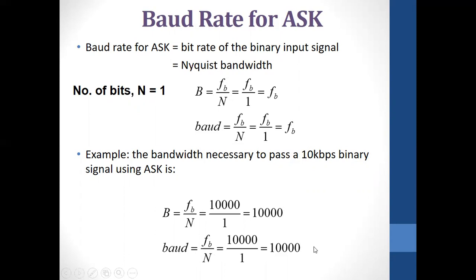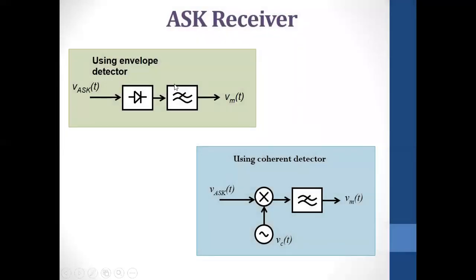At the receiver: there is a filter after receiving the signal, and then it is decoded to recover the original Vm line coding. The receiver types include the envelope detector (or amplitude detector) and the coherent detector. For the coherent detector, there is a multiplier mixer, the carrier amplitude is extracted, then filtered to recover the transmitted information signal.